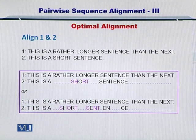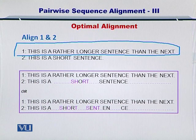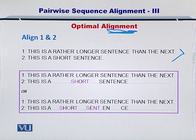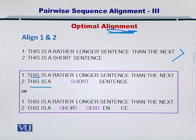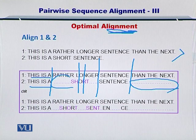Now I'll come to optimal alignment. Let me give you an example of what an optimal alignment is. Consider a sequence: 'This is a rather longer sentence than the next.' The second sequence is: 'This is a short sentence.' If we try to align these two sequences, we have two possibilities. In the first one, 'this' will be a perfect match, then 'o' will match with 'o,' and 'sentence' will match with 'sentence.' For the rest, you can insert gap dots.